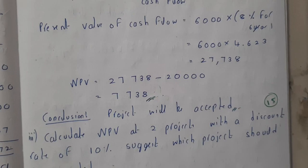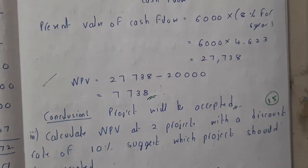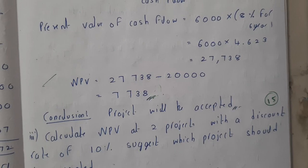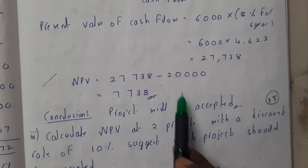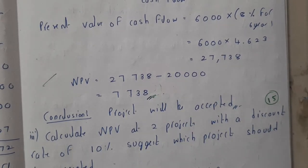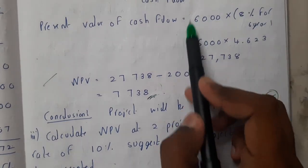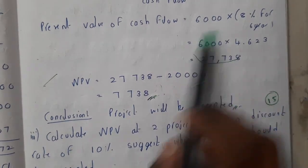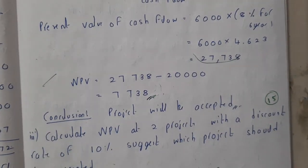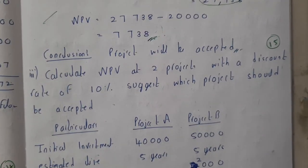So we are running in profit after six years. Since we are considering only a single machine and we got a positive NPV, we will accept this project. This is a simple problem, but it is an important concept to remember. I hope everyone got a clear idea. In the next lecture we will go through one more problem on NPV. Thank you, thanks for watching.